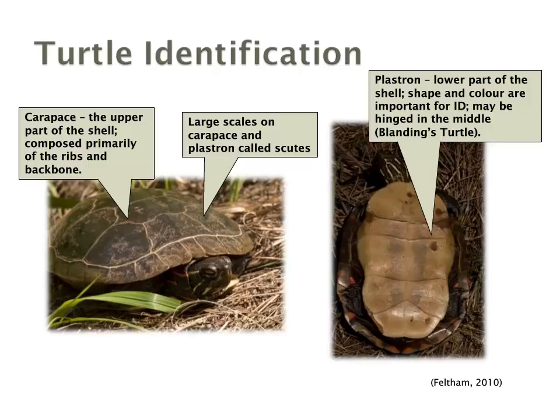There are several things that we look for to identify turtles. Turtles have a carapace, which is the upper part of the shell, composed primarily of the ribs and backbone fused together. The large scales present on the carapace and also the plastron — the lower part of the shell — are called scutes. The plastron's shape and colour are extremely important for identification.